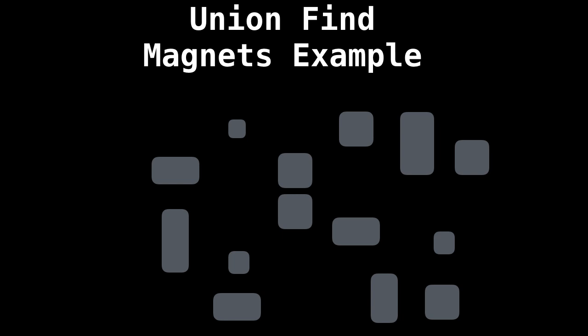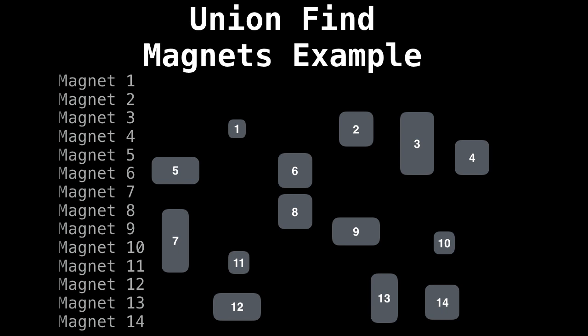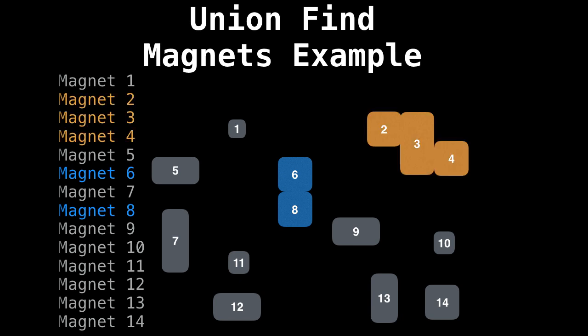So if we have this example with magnets — suppose all these gray rectangles you see on the screen are magnets. And also suppose that the magnets have a very high attraction to each other, meaning they want to merge together to form some sort of configuration. So if I label all the magnets and give them numbers, and we start merging the magnets of the highest attraction, first we're going to merge six and eight together since they're the closest. So in our union find, we would say union six and eight. And when we do a lookup to find out which groups six and eight belong to, they would belong to the blue group.